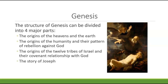The structure of Genesis can be divided into four major parts. There are the origins of the heaven and the earth in chapters 1 and 2, the origins of humanity, and their pattern of rebellion against God. Chapter 3 introduces this rebellion with the first created couple, and what they do establishes a pattern of other rebellions.